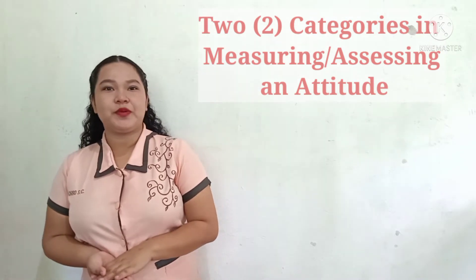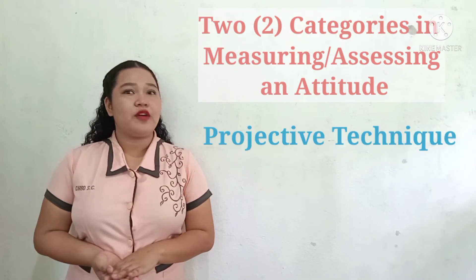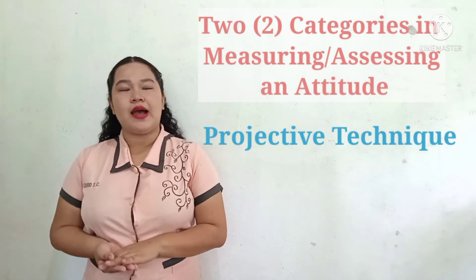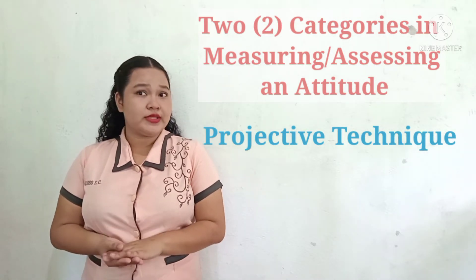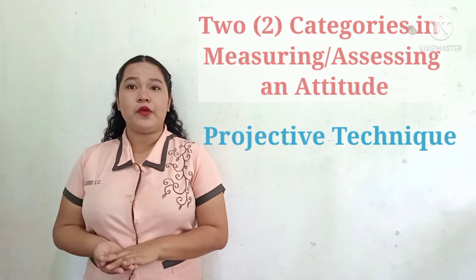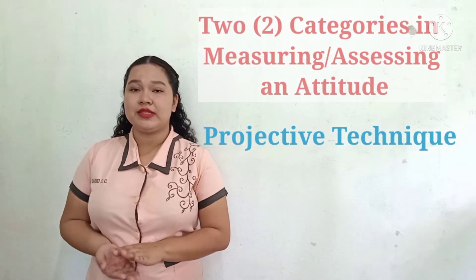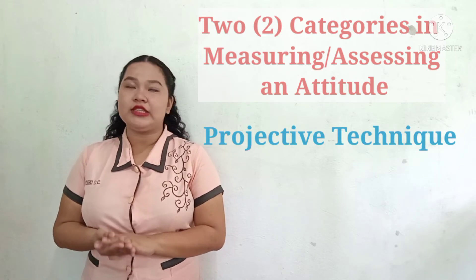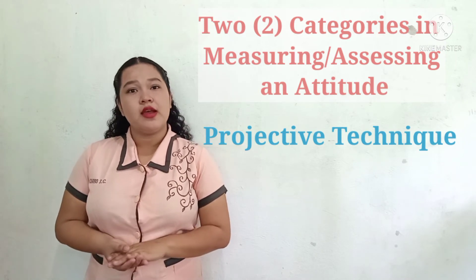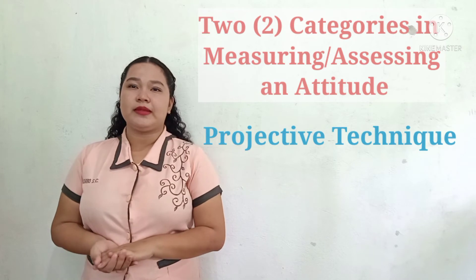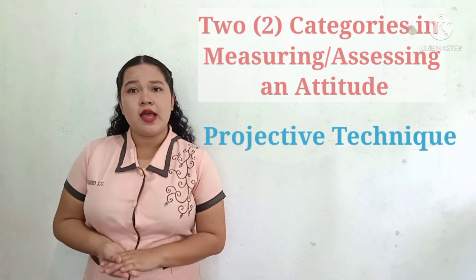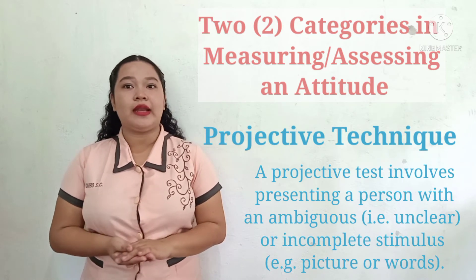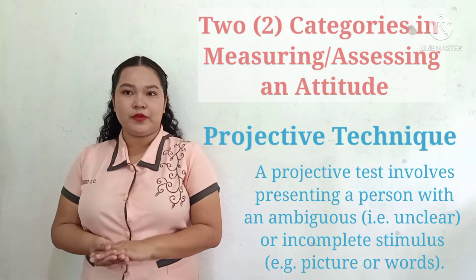To avoid the problem of social desirability, various indirect measures of attitudes have been used. Either people are unaware of what is being measured — which raises ethical problems — or they are unable to consciously affect what is being measured. Indirect methods typically involve the use of a projective test, which involves presenting a person with an ambiguous or incomplete stimulus.